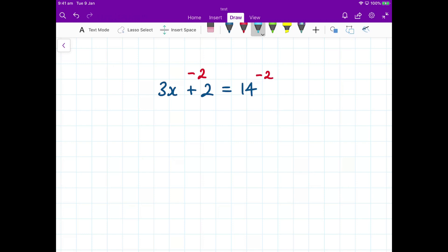By doing that, I can see here I've got this plus 2 and minus 2. Well, they're going to cancel. So they've gone. And if we've cancelled them or eliminated that plus 2, then the only thing left on the left hand side is the 3x. Then we've got the equals. And then 14 subtract 2. Well, that is 12.